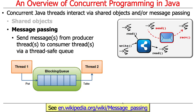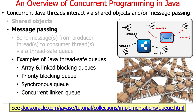The second form of interaction available to concurrent threads is message passing. As the name implies, it involves sending messages from one or more producer threads to one or more consumer threads via a thread-safe queue. You'll typically use a blocking queue: if the queue is empty and a thread wants to take something out, it blocks until there's something available; if a thread wants to put something in and the queue is full, it waits until the queue is not full. Java has lots of message-passing mechanisms including array and linked blocking queues, priority blocking queues, synchronous queues, and concurrent linked queues.